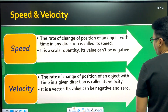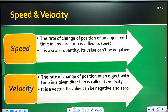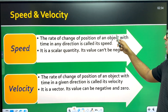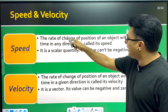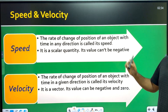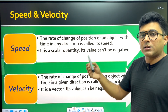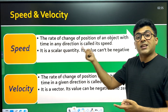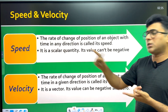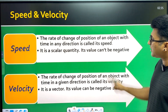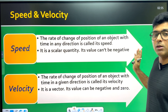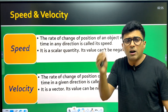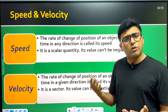Next is speed and velocity. Speed means the rate of change of position of an object with time in any direction. Speed is related to distance, making it a scalar quantity. The speed of an object is always zero or positive; it can never be negative.